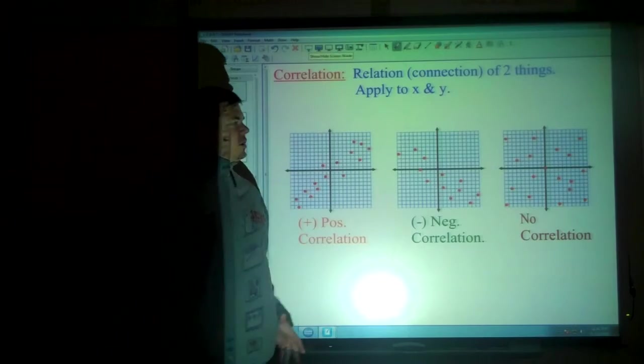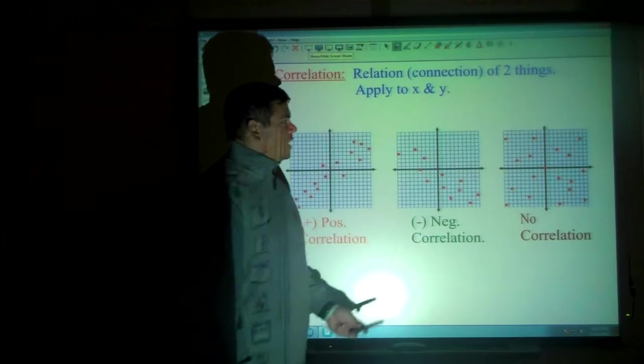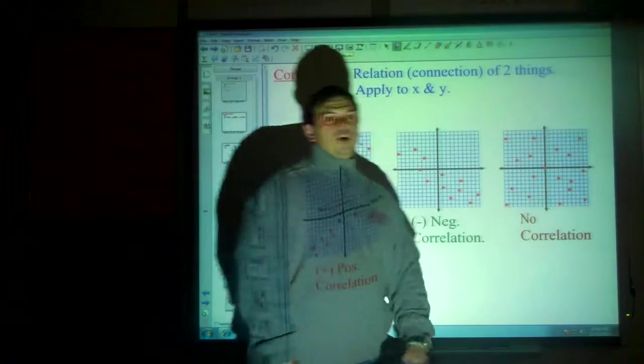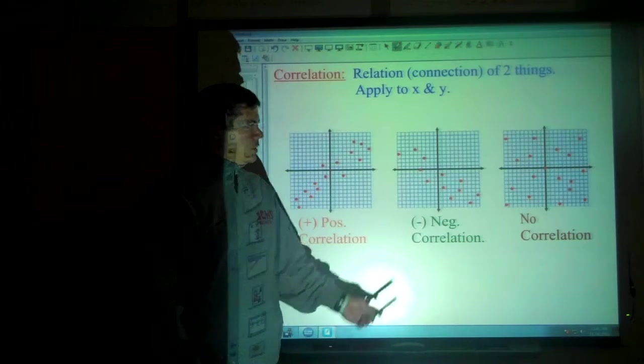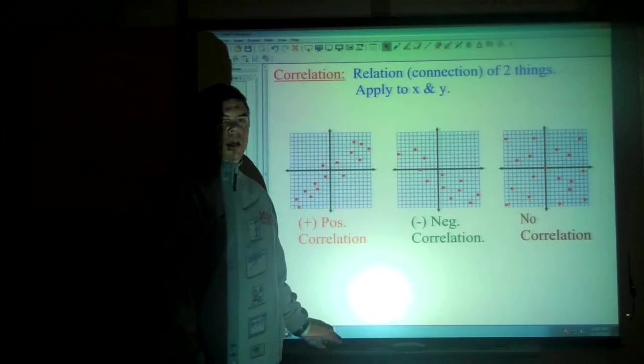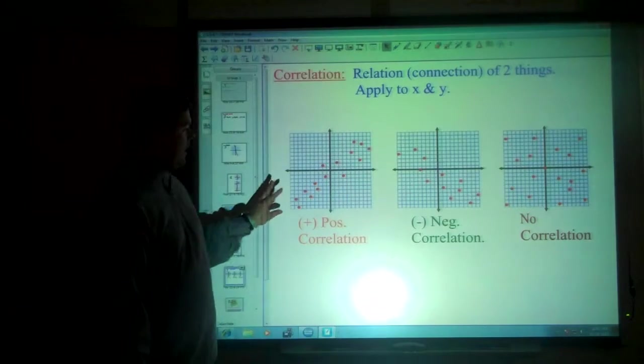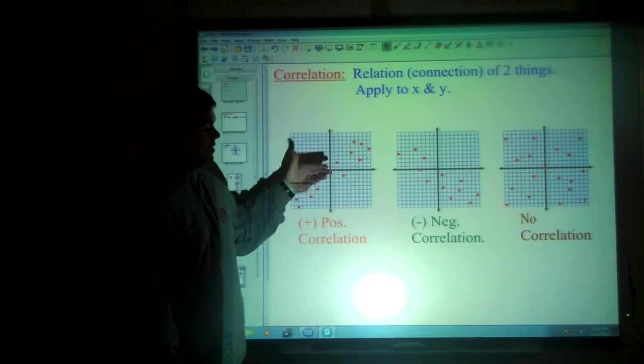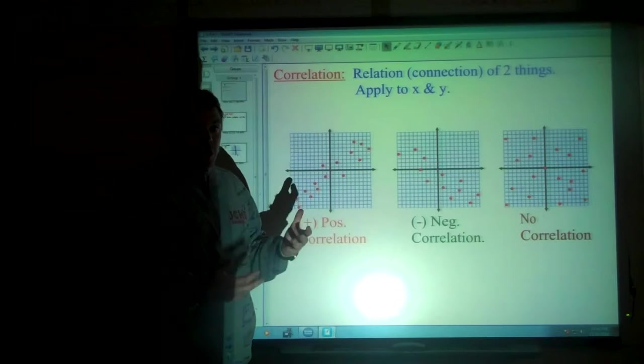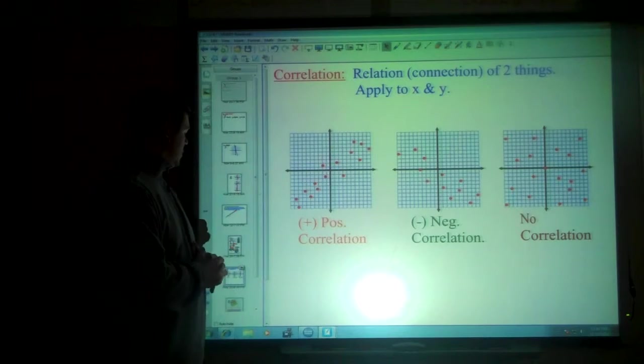And this one has no correlation. The dots are all scattered. This has to do with how much I weigh and what year or what month I was born. There's no correlation between the month you're born and how much you weigh. So there's a lot of different graphs. You want to look at the data and say, what's the relationship? Is it positive? Is it negative? Is there no correlation? No connection? It all depends on your situation.